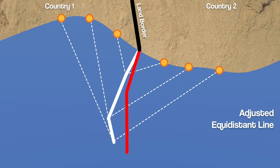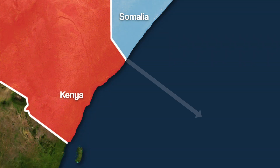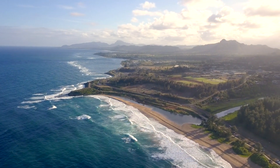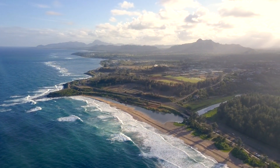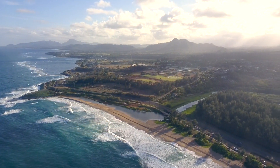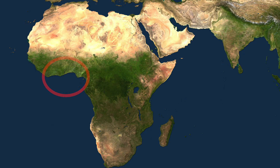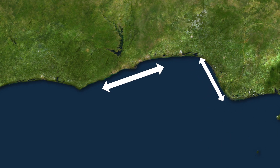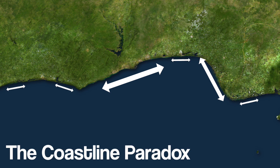But wouldn't it be easier to draw a line that's just perpendicular to the direction of the coast? Well, simply saying 'direction of the coast' isn't enough. Coastlines twist and turn, and depending on what scale you measure, the same section could be going two different ways. For example, what's the general direction of this coastline? It's this way, right? Well, let's look closer. Now it looks like the coastline is going this way, but here it's going this way. The more you zoom in, the more different directions you find. The closer you look at a coastline, the harder it becomes to measure it.